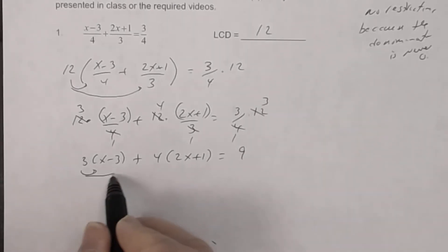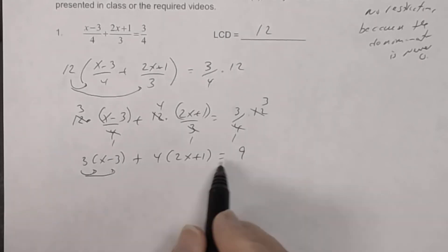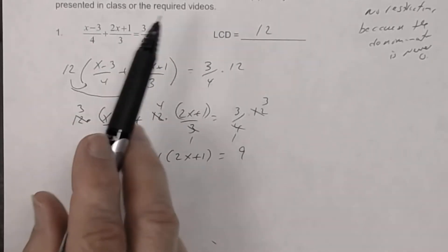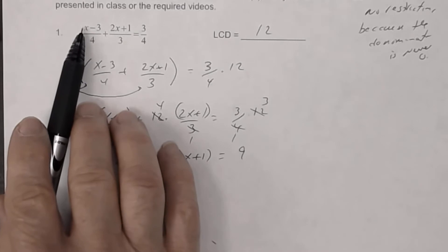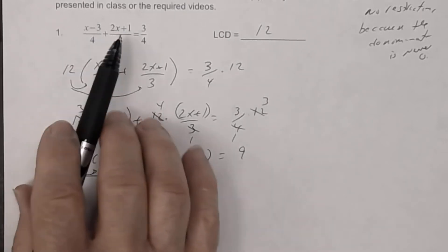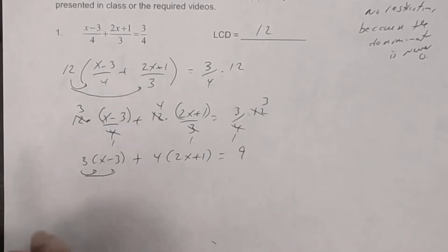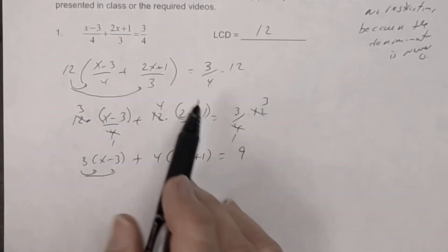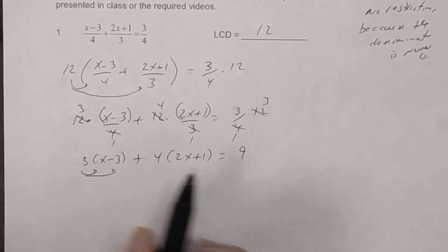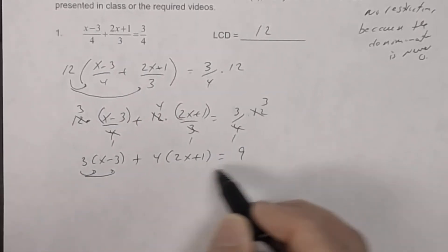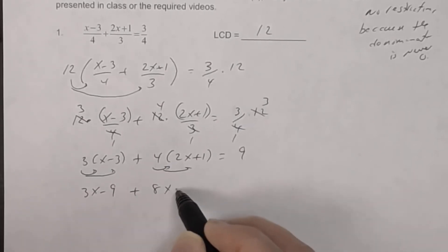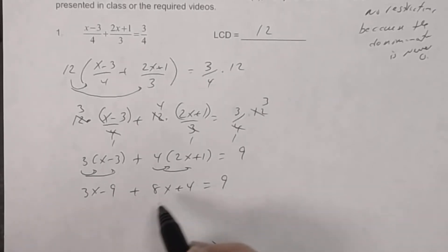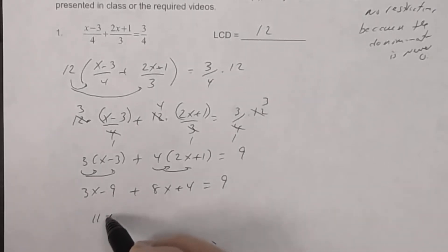Distributing gives a linear equation. This was actually linear all along — the numerators all have variables to the first power and the denominators are constants. Distribute the 3 and the 4: you get 3x minus 9 plus 8x plus 4 equals 9.